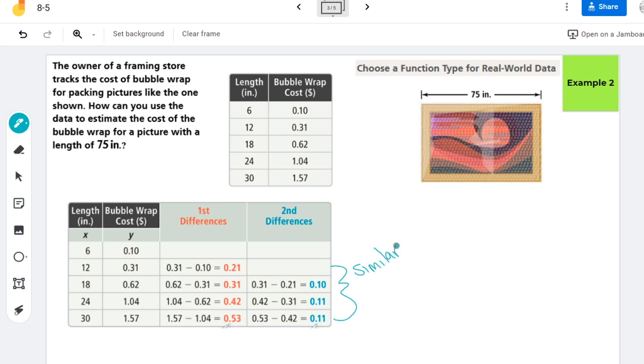So because those second differences are so similar, we're going to go ahead and use a quadratic model. So similar, use quadratic. This is going to be modeled with some kind of parabola, which honestly isn't terribly surprising since bubble wrap is two-dimensional. It would probably be a quadratic thing for area, right?